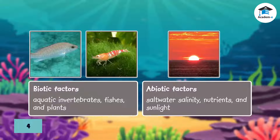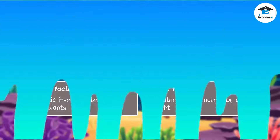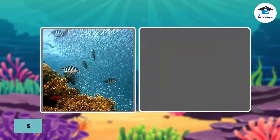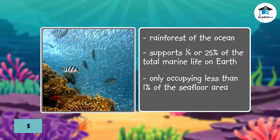From here, other organisms like aquatic invertebrates, fishes, and plants live together with the appropriate abiotic components such as saltwater salinity, nutrients, and sunlight. Coral reefs are considered the rainforest of the ocean because they support one-fourth of the total marine life on Earth while only occupying less than 1% of the seafloor.